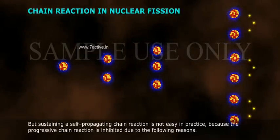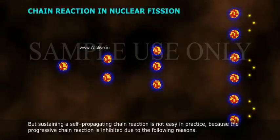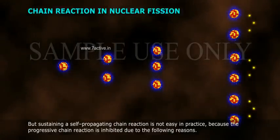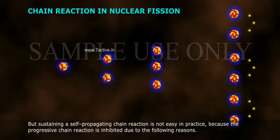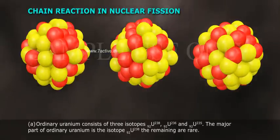But sustaining a self-propagating chain reaction is not easy in practice, because the progressive chain reaction is inhibited due to the following reasons.